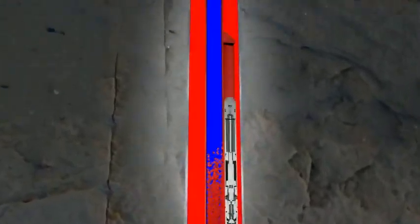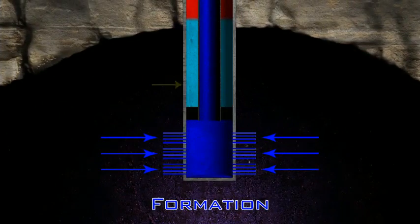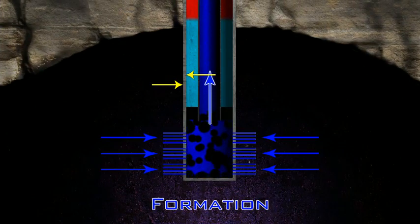The gas bubbles expand as they rise to the surface, displacing the liquid around them and reducing the density and weight of the fluid. This decreases the flowing tubing pressure, creating a differential pressure between the reservoir and the wellbore, and allowing the well to produce at its optimum rate.